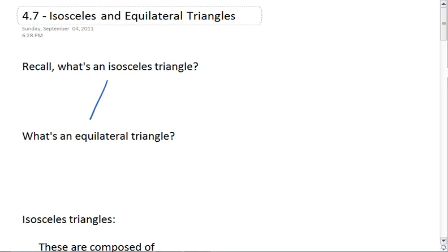What is an isosceles triangle? An isosceles triangle has at least two congruent sides. While an equilateral triangle has all three congruent sides.